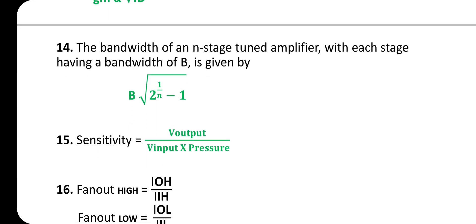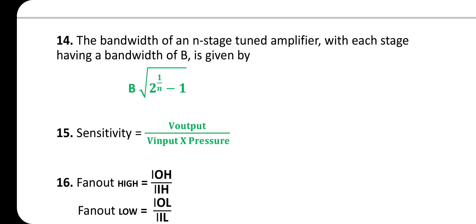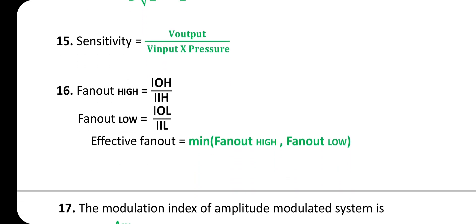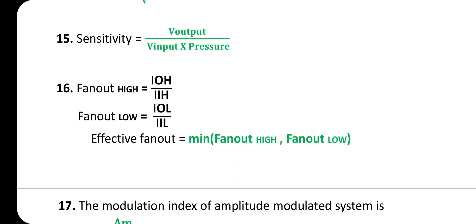The bandwidth of an n-stage tuned amplifier, with each stage having bandwidth B, is given by: B_total = B × √(2^(1/n) − 1). Sensitivity = V_out / V_in × pressure.